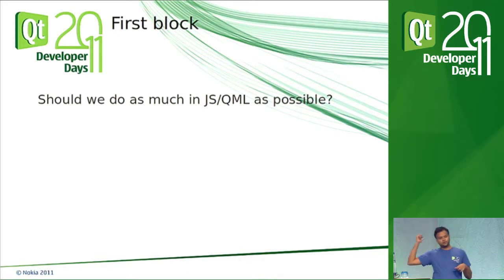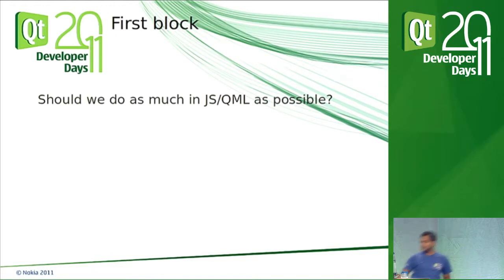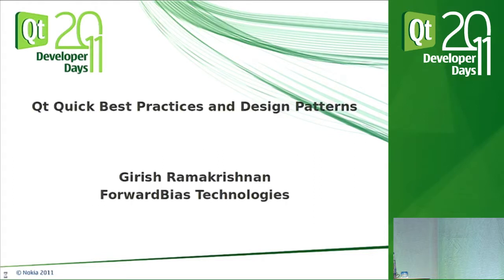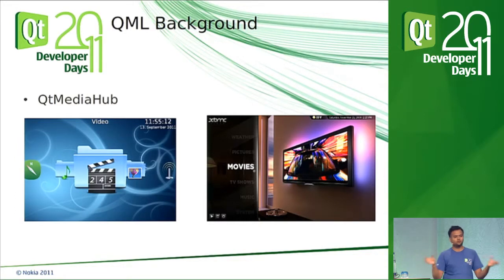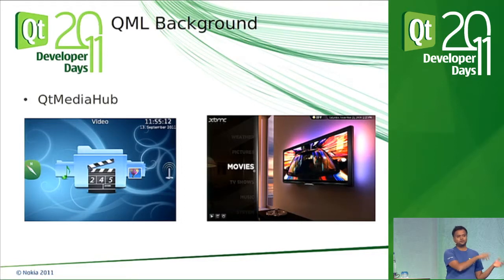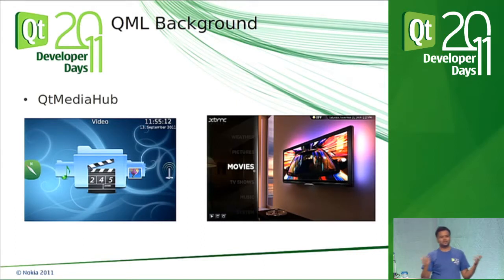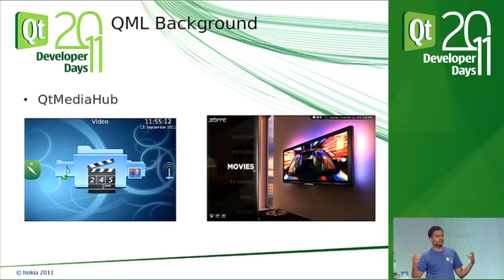In Qt Media Hub we had two different user interfaces — what we call skins. When we started working on the second skin, we found we were copying code from the first skin — exact same code. We thought we'd share the JavaScript across these skins, but that didn't work well either, because these are really third-party skins.